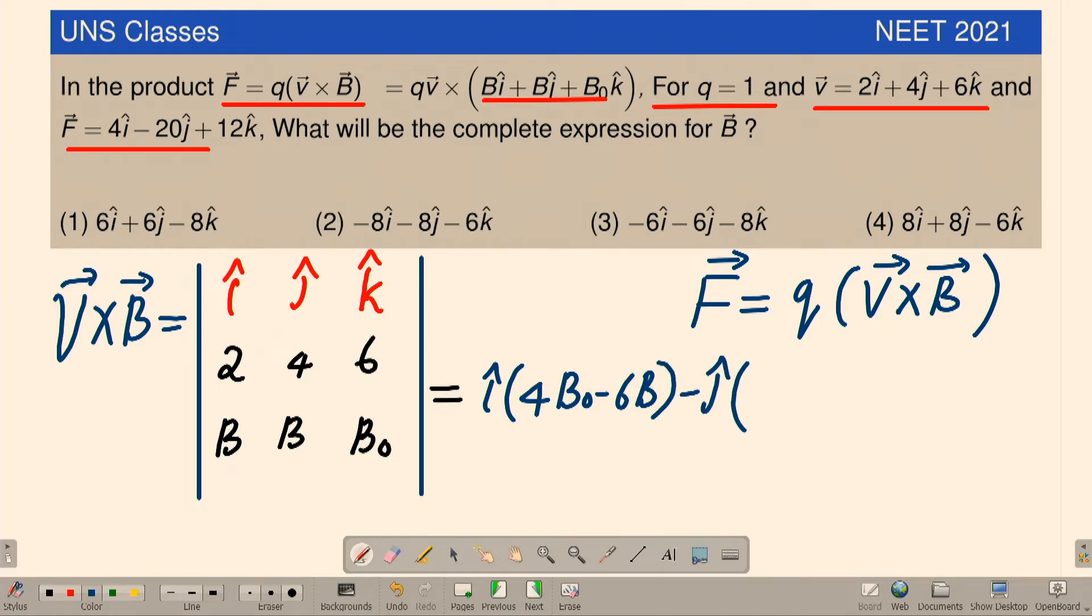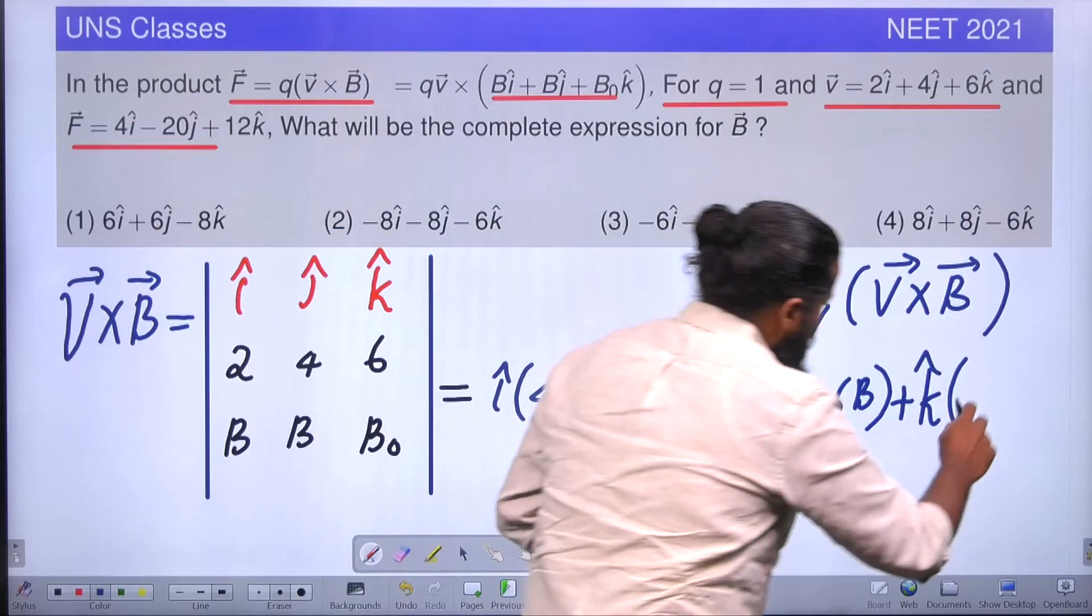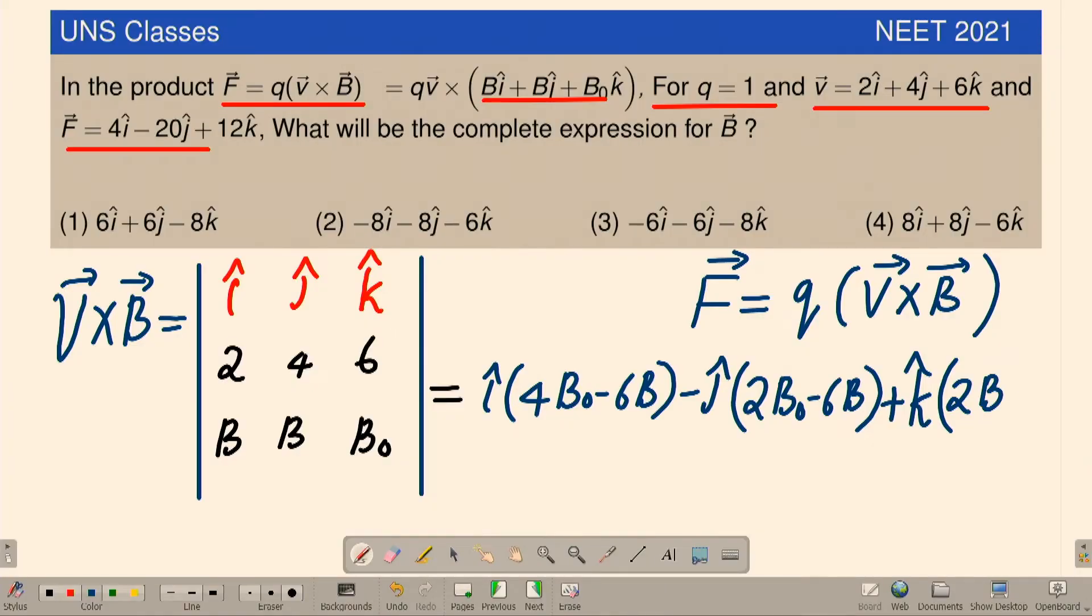Minus j cap multiplied by 2B₀ - 6B, then plus k cap multiplied by the last term, 2B - 4B.